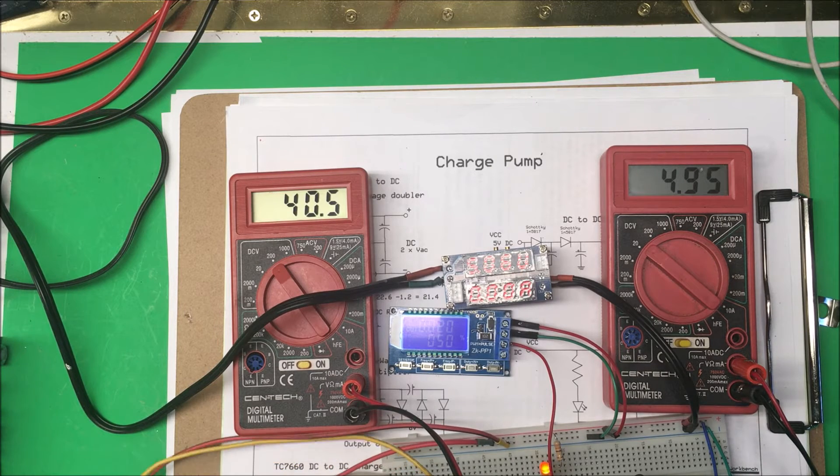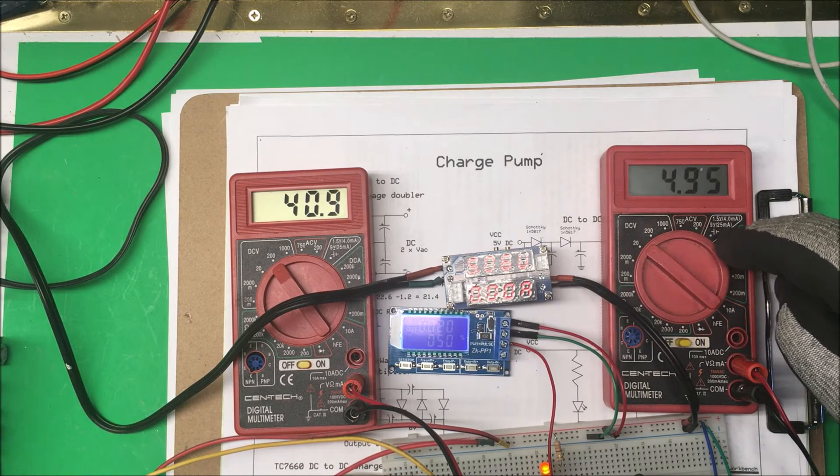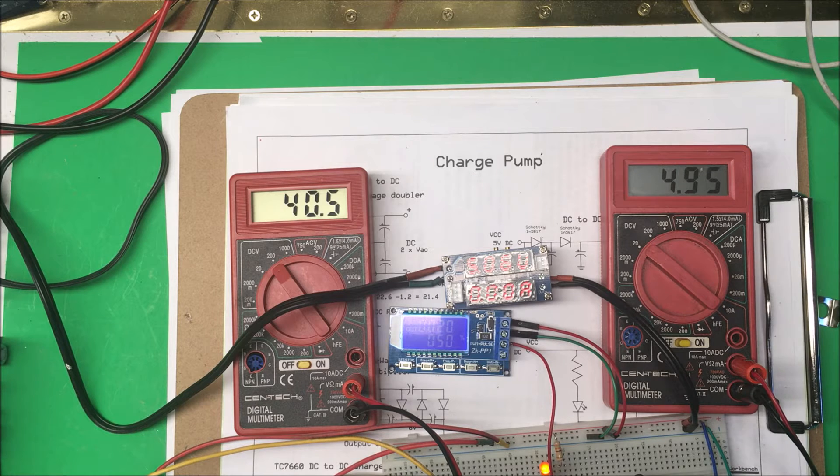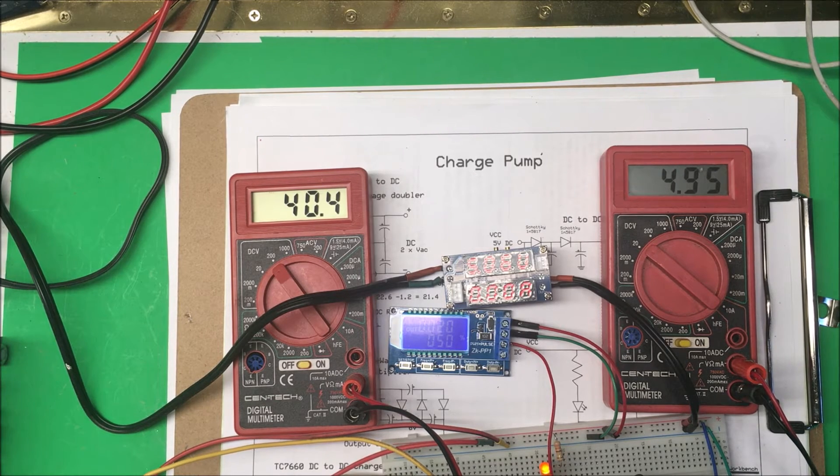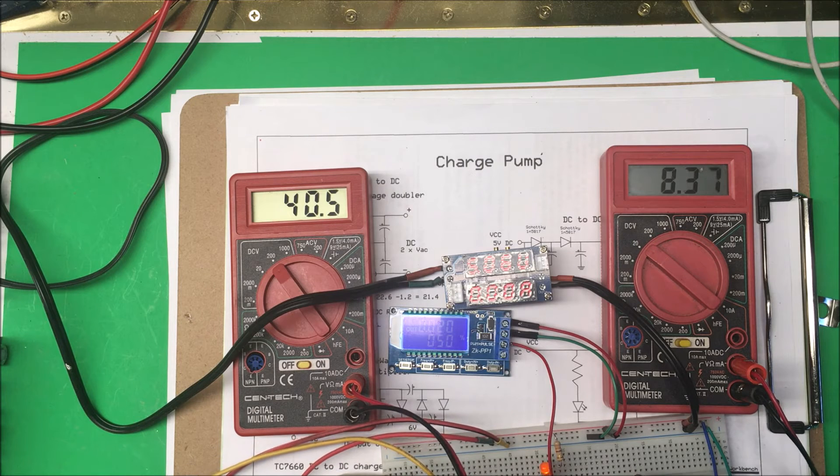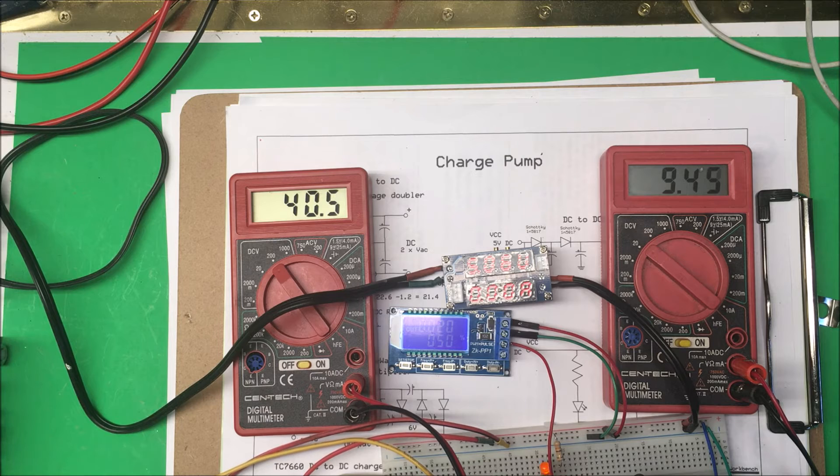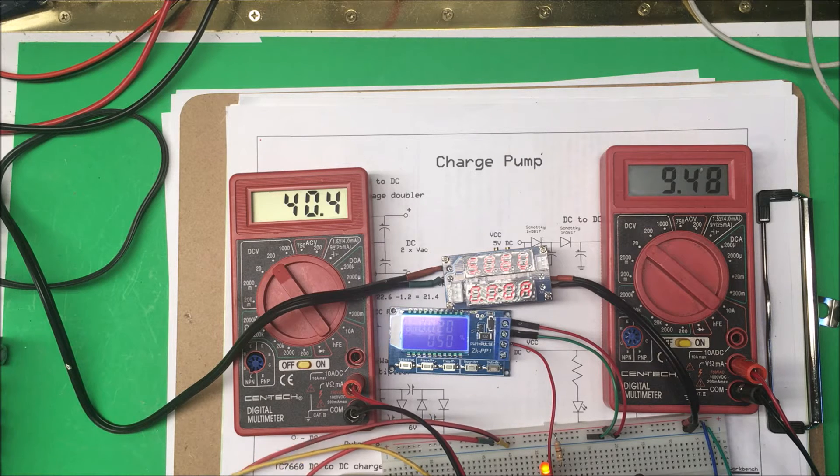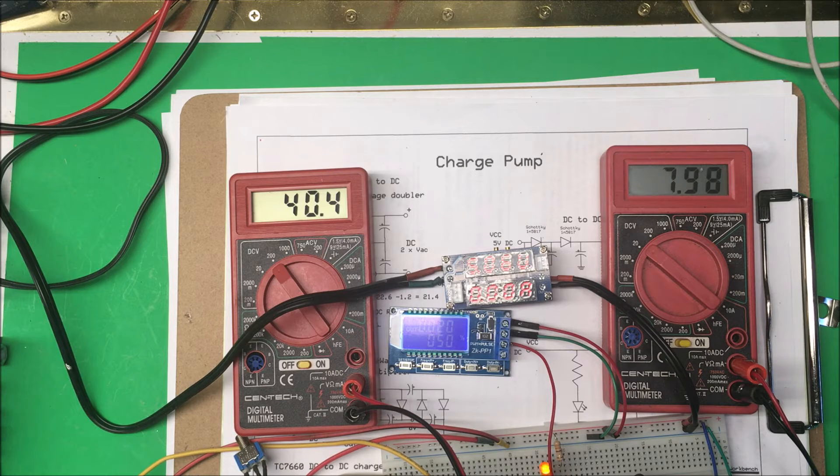And this one here, I have 5 volts on there, or 4.95 volts on there right now. And then if I turn the switch here, I got 9.4, depends how fast I go here, I get up to 9.5 or so.